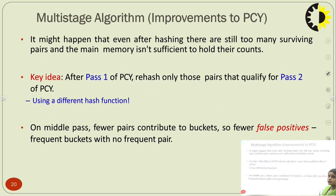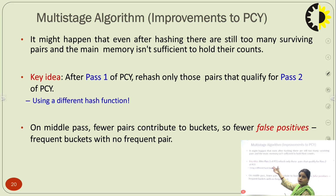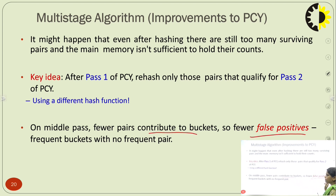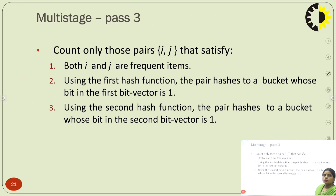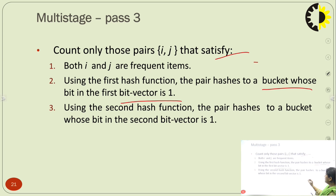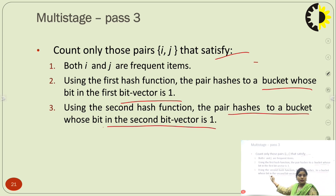It might happen that even after hashing, there are still too many surviving pairs and main memory is not sufficient to hold their counts. The key idea is: after pass 1 of PCY, rehash only those pairs that qualify for pass 2 of PCY using different hash functions. In the middle passes, fewer pairs contribute to the buckets, so only fewer false positives — frequent buckets with no frequent pairs — can be found. We count only those pairs satisfying 3 conditions: both i and j are frequent items; using the first hash function, the pair hashes to a bucket whose bit in the first bit vector is 1; and using the second hash function, the pair hashes to a bucket whose bit in the second bit vector is 1, meaning count exceeds the minimum threshold.